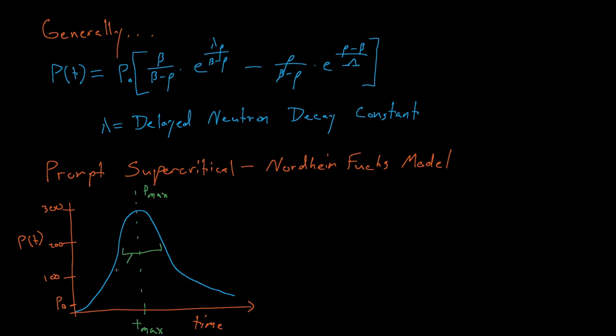The maximum power that a reactor sees, P max, during this excursion, is actually inversely proportional to the prompt neutron lifetime, and the width of the peak in time is actually directly proportional to lambda.